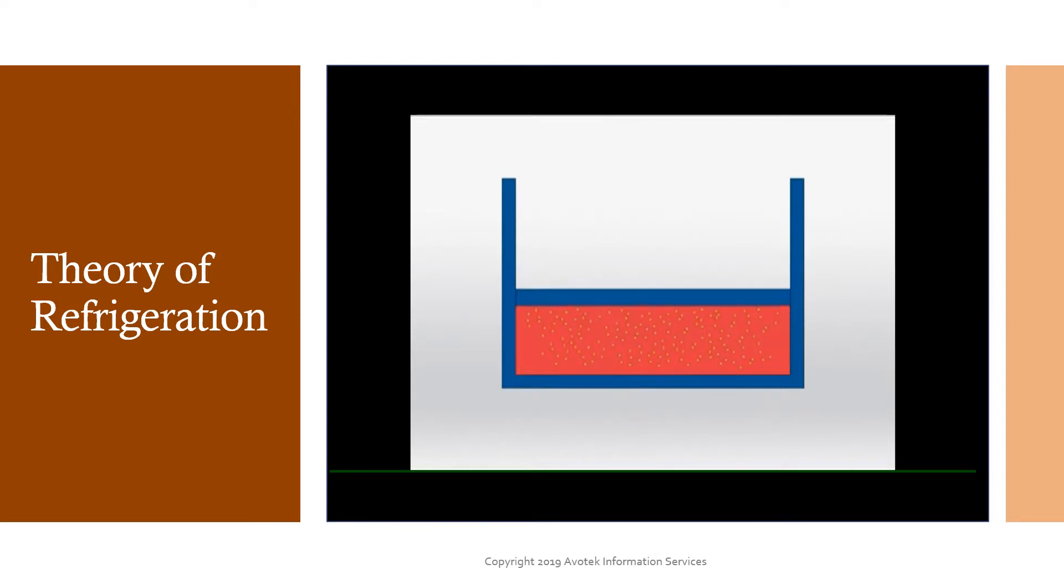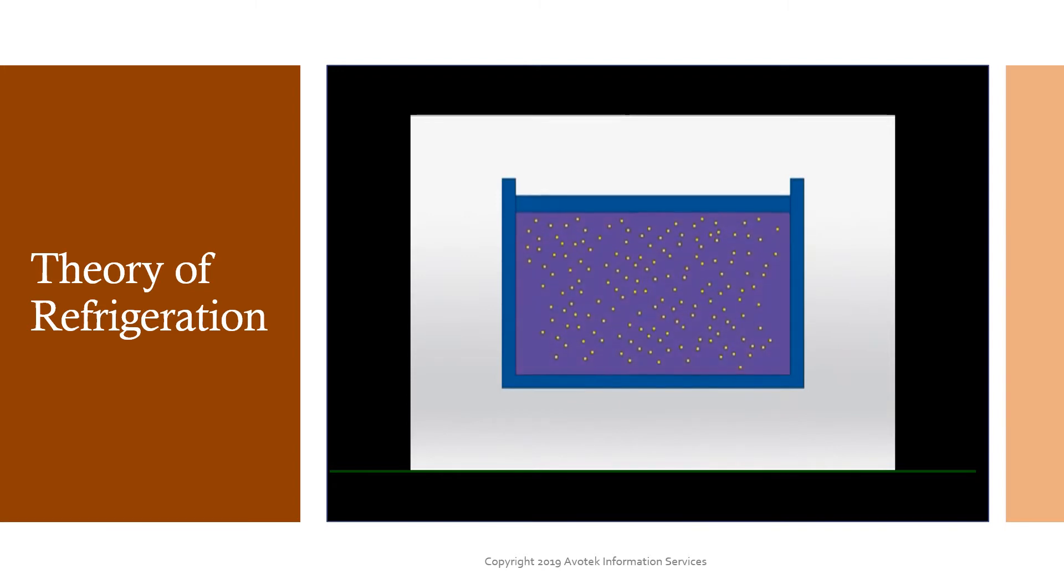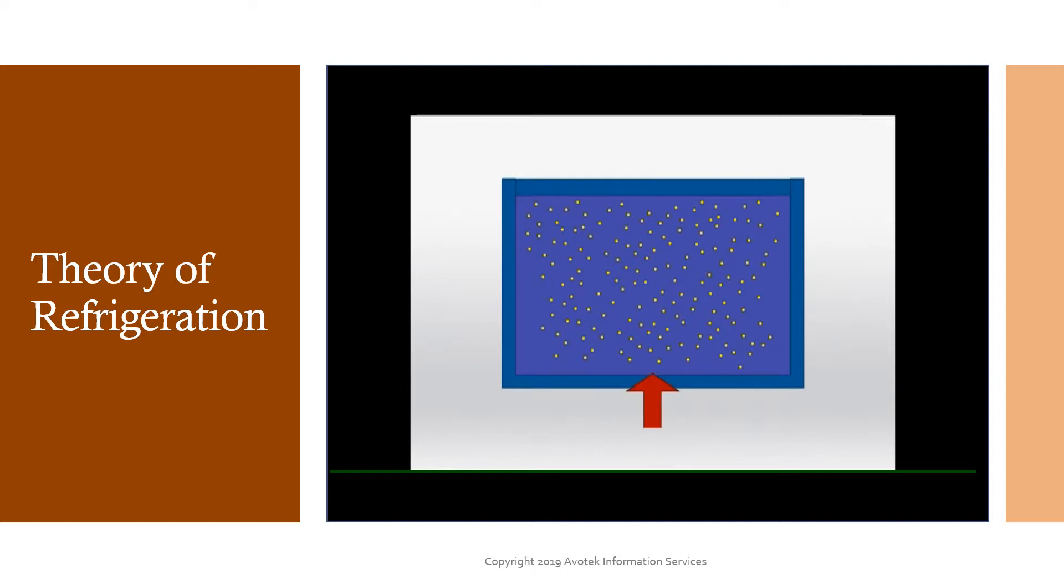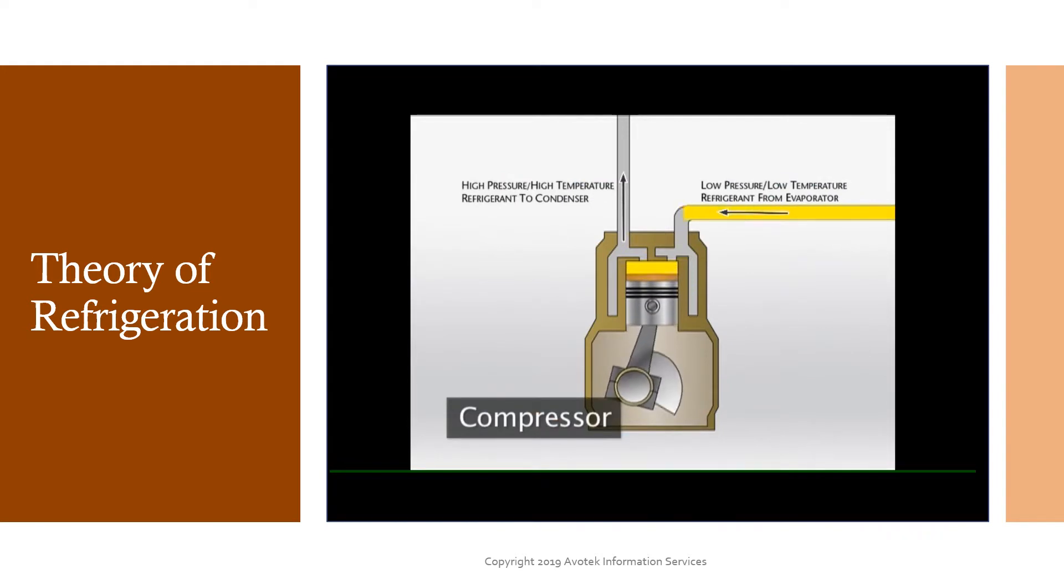If this gas is allowed to expand, it drops in temperature. That makes it cooler than the air in the space to be cooled. Heat will now flow from the heat source to the gas, which is compressed again, beginning a new cycle. The mechanical energy required to cause this apparent reverse flow of heat is supplied by a compressor.